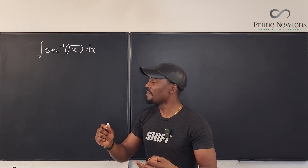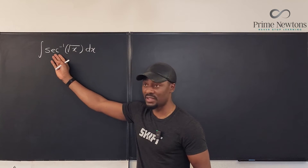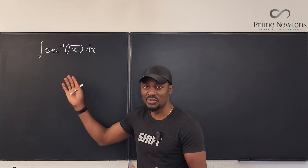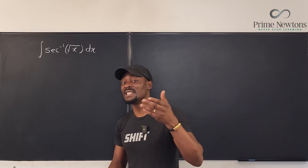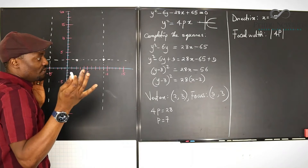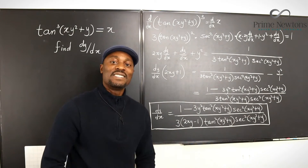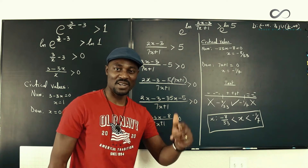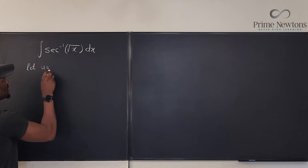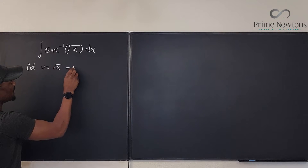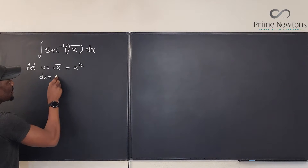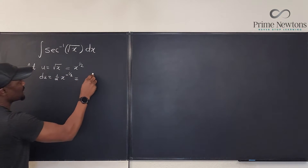So we're doing u-substitution and integration by parts, because you don't know how to integrate inverse secant but you can differentiate it. Most people don't have the derivative of inverse secant memorized, so we'll learn how to differentiate it. Our very first move is to do a u-substitution. Let u equal the square root of x, written as x to the one-half. Then du will be one-half x to the negative one-half.